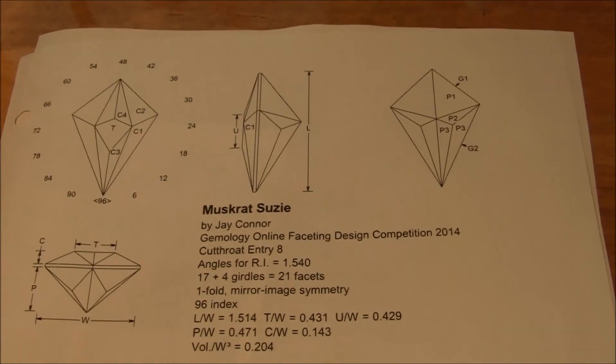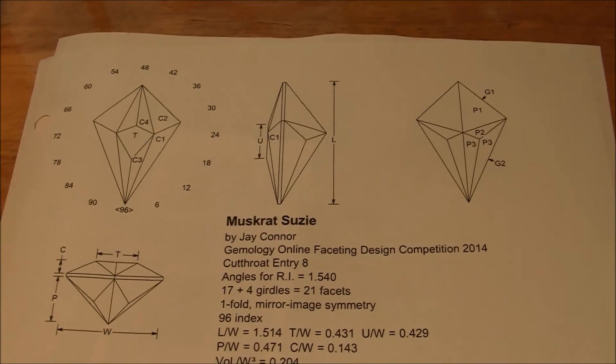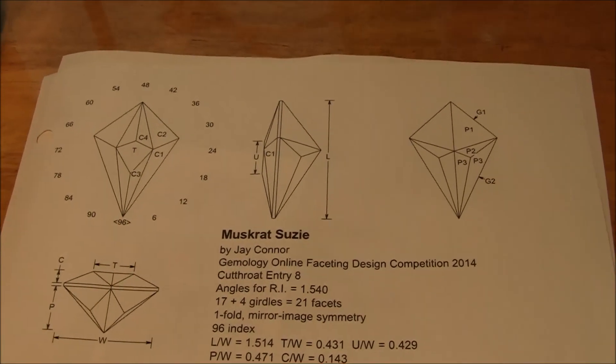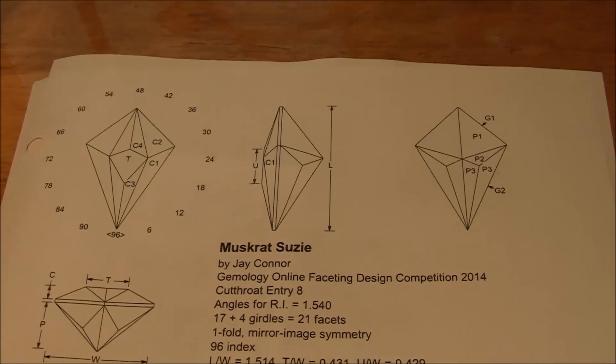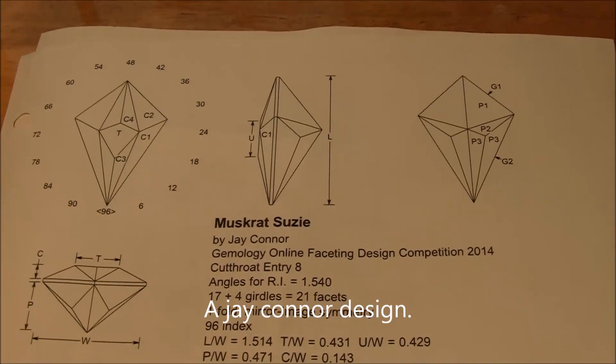Here is the faceting diagram I'm going to use for this piece of rough, and it's called Muskrat Susie by Mr. Jeff Connor.